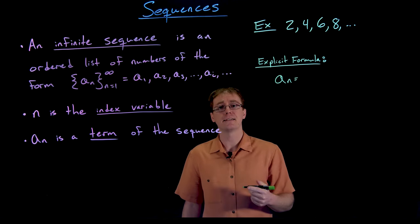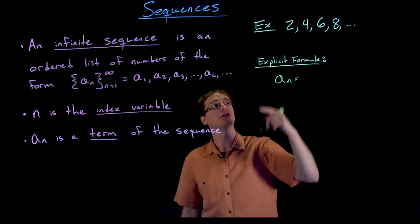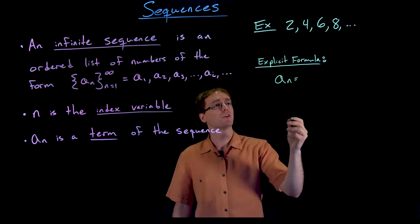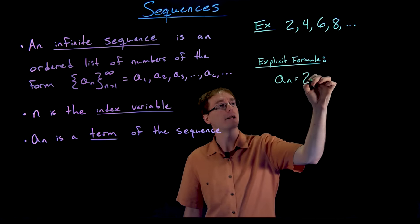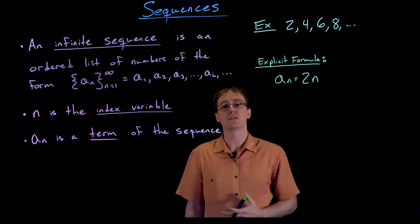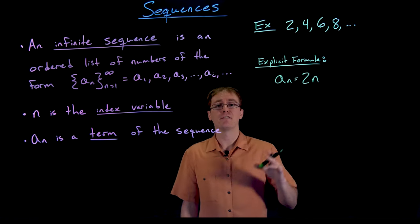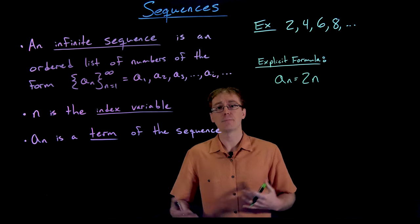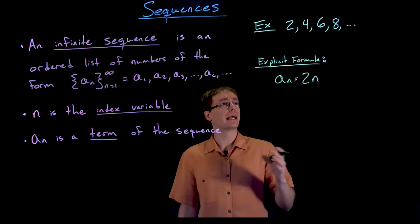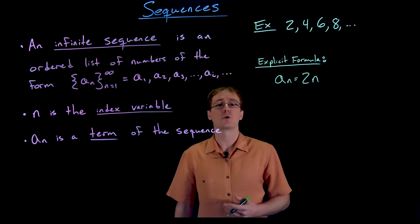If we plug in our starting index n equals one, we have to get two. If we plug in n equals two, we should get four. If we plug in n equals three, we should get six, and so on. Since these are the even integers, pattern recognition helps us see that the explicit formula for this sequence is two times n. We'll be doing many things with sequences like finding limits and adding terms to create series, and this explicit formula a sub n equals some function of n is the most common way we work with sequences.